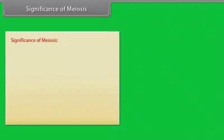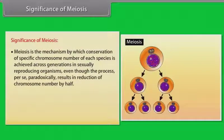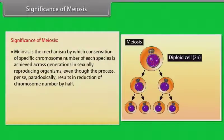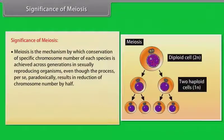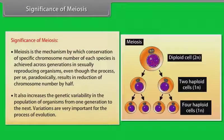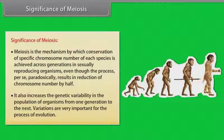Meiosis is the mechanism by which conservation of specific chromosome number of each species is achieved across generations in sexually reproducing organisms, even though the process per se paradoxically results in reduction of chromosome number by half. It also increases the genetic variability in the population of organisms from one generation to the next. Variations are very important for the process of evolution.